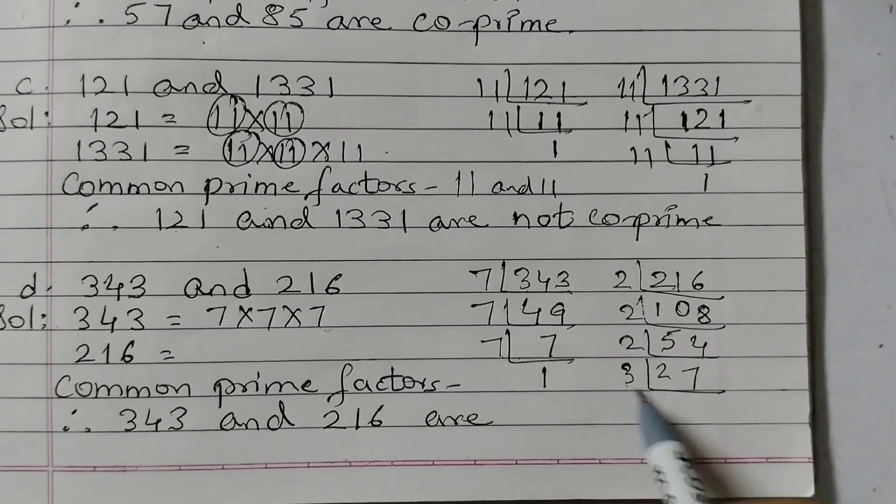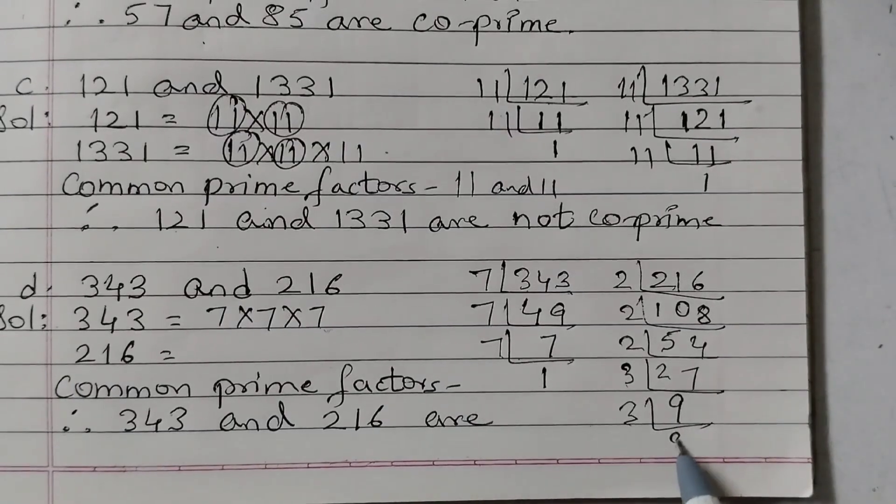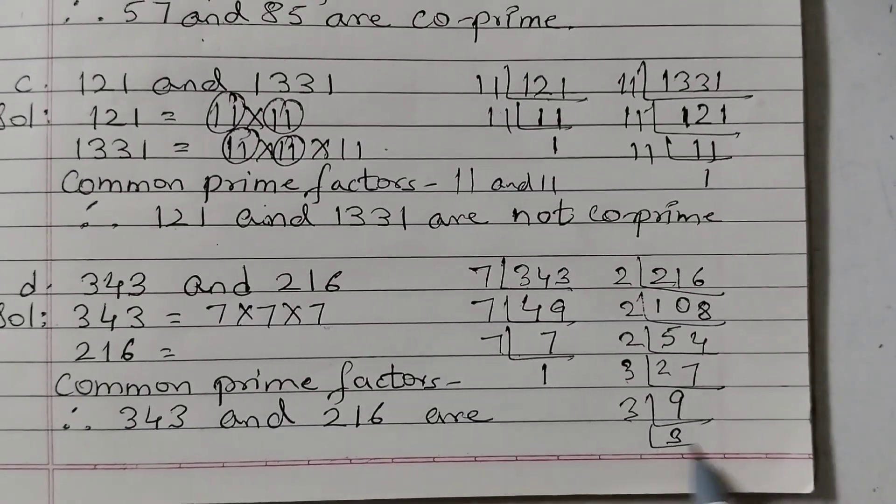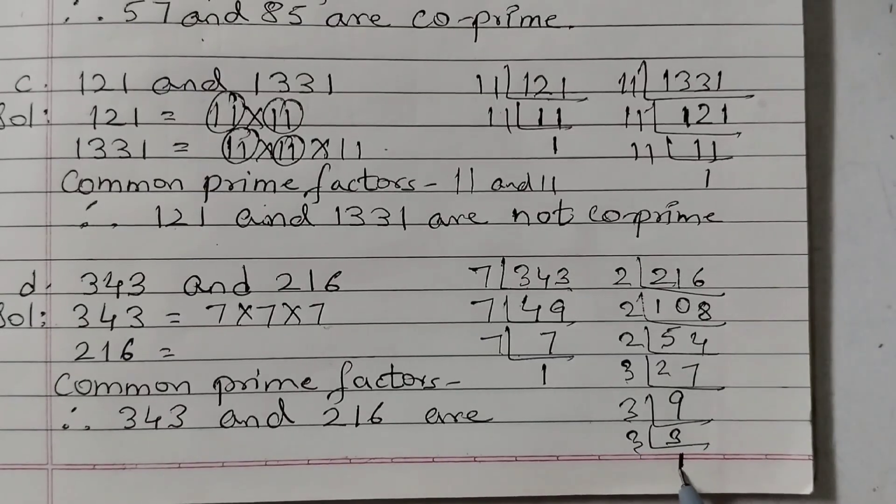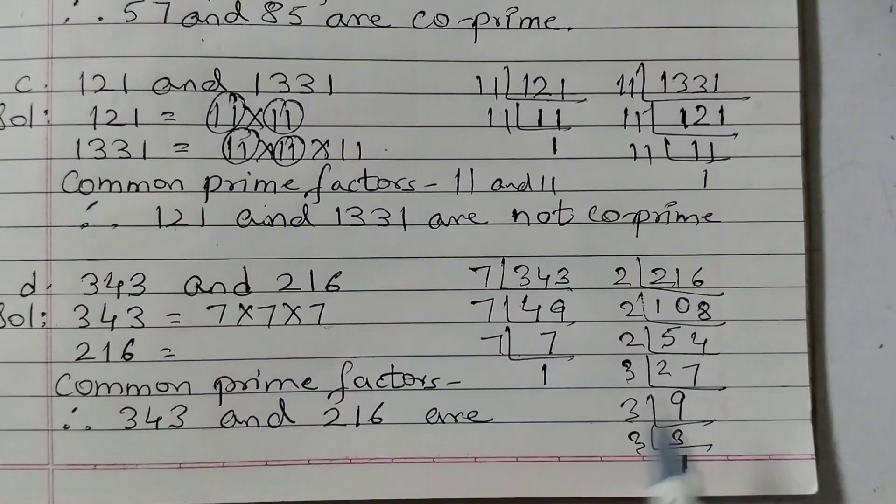27 goes by 3. 3 nines are 27. And 3, 3s are 9. We go on doing till we get 1. But then we don't need to write 1 here as a common factor because we are writing only the prime factors.